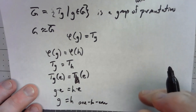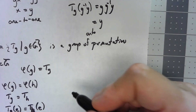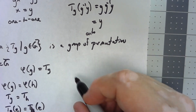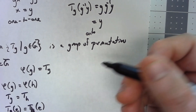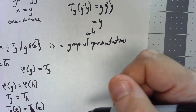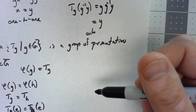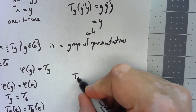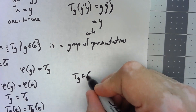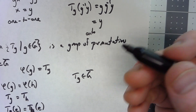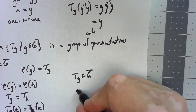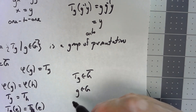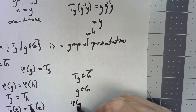We also need to show φ is onto. By the way we've constructed this, if t_g is an element of Ḡ, that came from g being an element of G, and certainly φ(g) equals t_g. So it has to be onto.